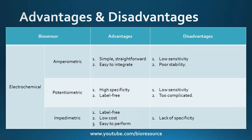Coming to electrochemical-based sensing, there are different types: amperometric, potentiometric, and impedimetric sensors. Amperometric sensing is simple, straightforward, and easily integrated, but has low sensitivity and poor stability. Potentiometric biosensors are highly specific and label-free, but again the sensitivity is an issue and the process is complicated. Impedimetric biosensors are label-free, low cost, and easy to perform, but they lack specificity.